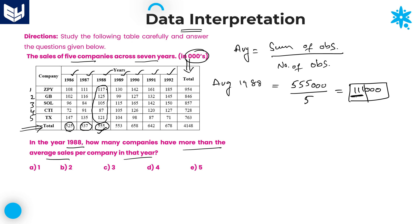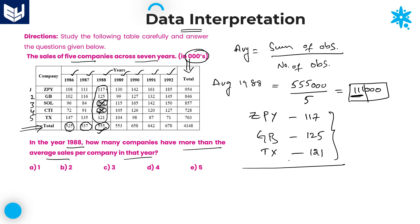The average is 111. How many companies have more than 111 in sales? ZPY has 117 — that is more than 111. GB has 125 — also more than 111. SOL has only 105 — we should not count this one. CTI has only 87 — that is less than 111. And the last one, TX, has 121, which is also more than 111. Therefore, 3 companies have more than the average. Option C is the right answer.